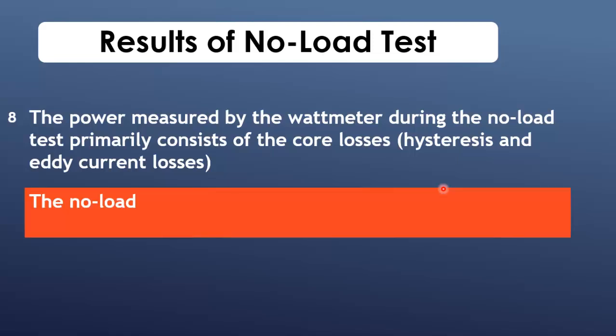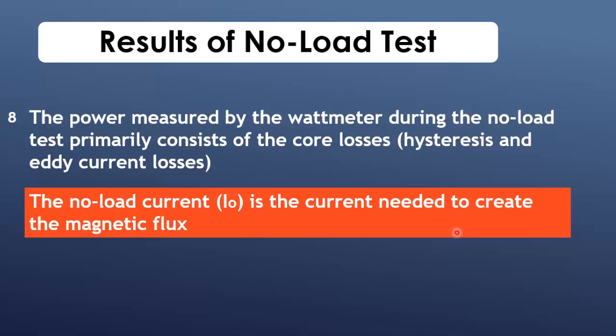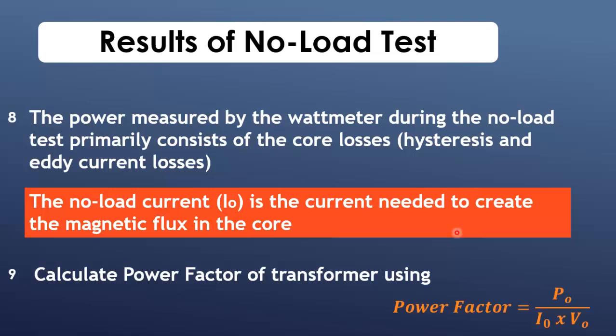The no-load current is the current needed to create the magnetic flux in the core. We can also calculate power factor of transformer at no-load using the formula given below. Where P is the power from wattmeter, V is the voltage from voltmeter, and I is the current from ammeter.